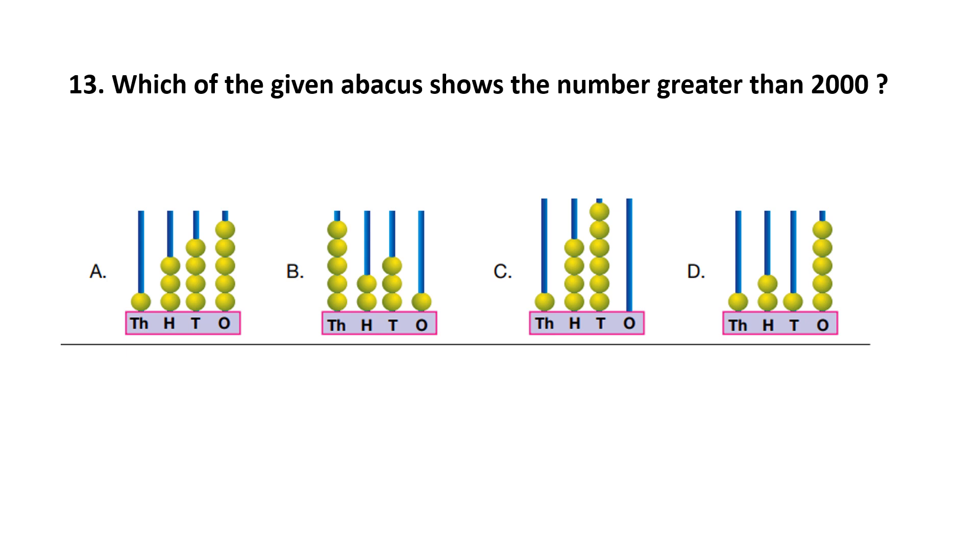Question number 13. Which of the given abacus shows the number greater than 2000? Let's look at the options. You can see, in option A, at 1000 place, there is 1 ball. So, this is incorrect. In option B, at 1000 place, there are 5 balls, which is greater than 2. So, this option is our answer.